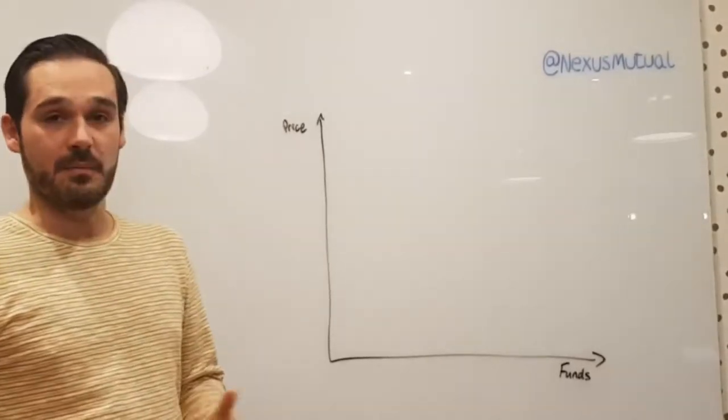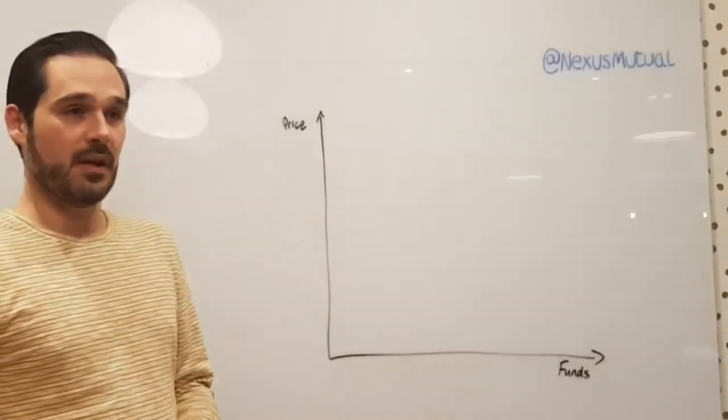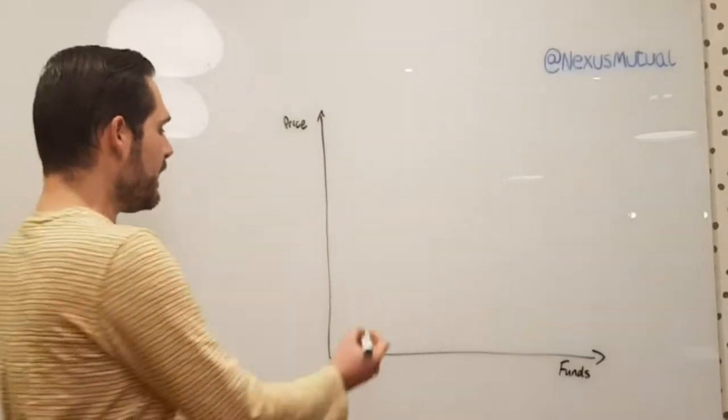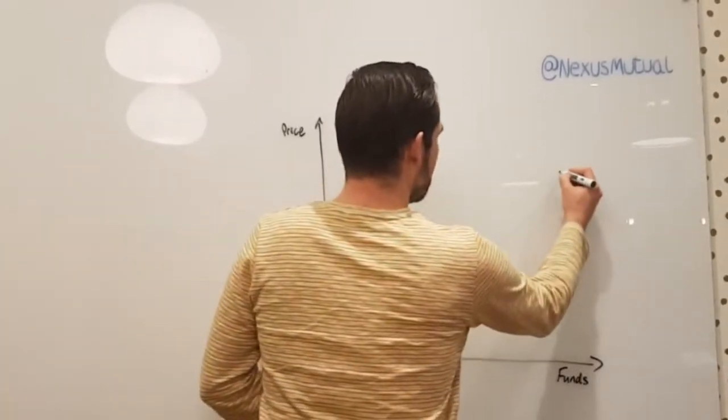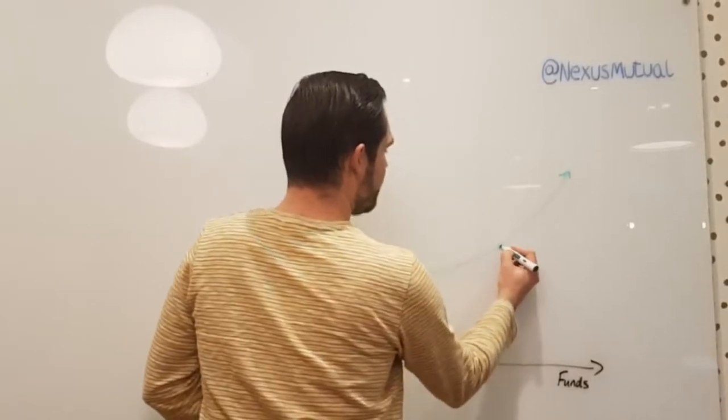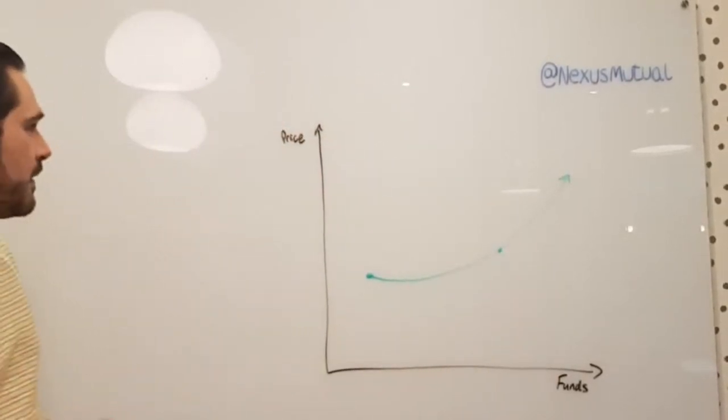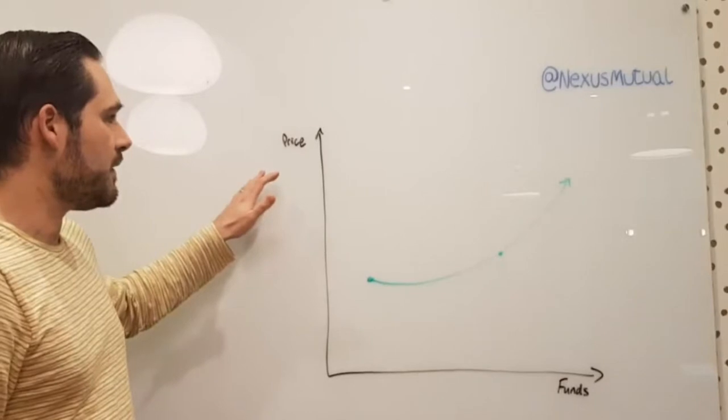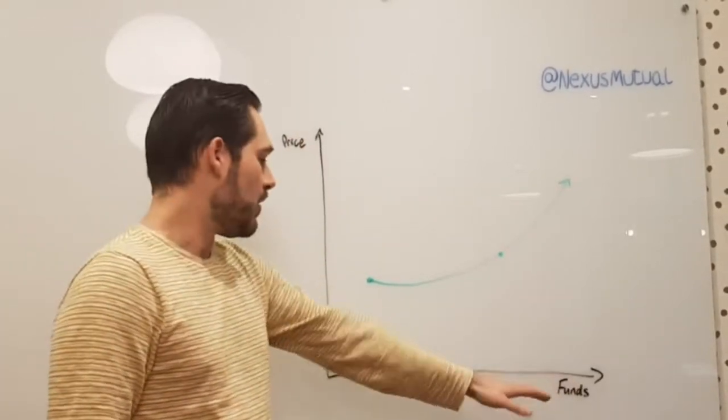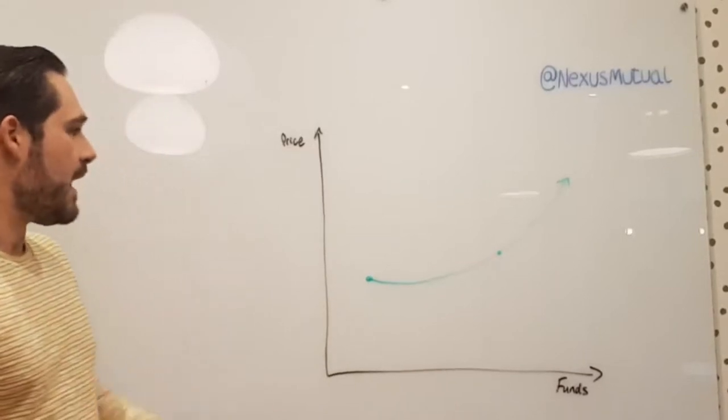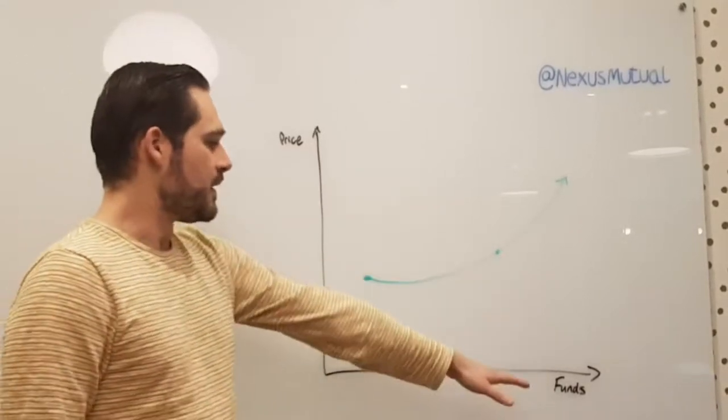To do that, the main crux of it is a bonding curve or a continuous token model. In essence that looks something like this. We have the price on the y-axis and the level of funds in the mutual on the x-axis, and the price tends to go up the more funds we have.